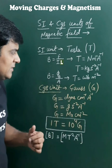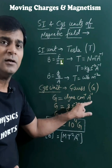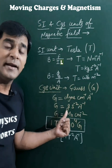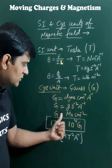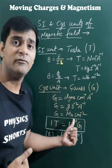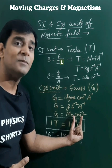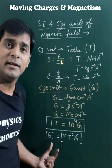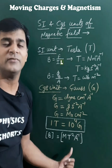The CGS unit is Gauss, which is dyne per centimeter per ampere, or in terms of mass, gram per second squared per ampere. In terms of Maxwell, which is the CGS unit of magnetic flux, it is Maxwell per centimeter square. The dimension of the magnetic field is M T minus 2 A minus 1.